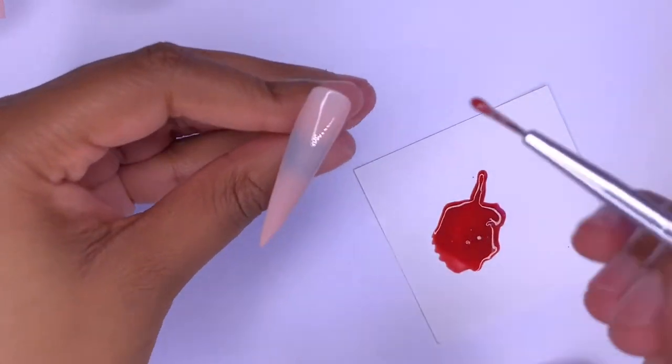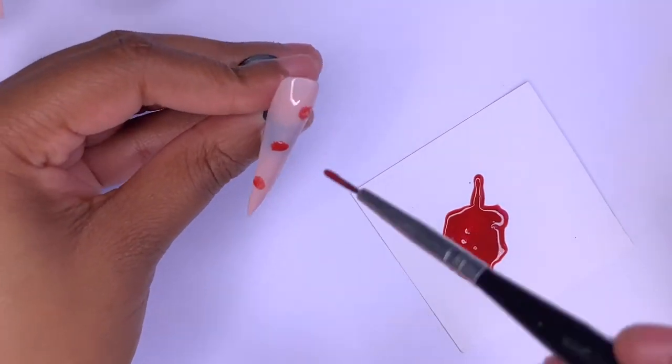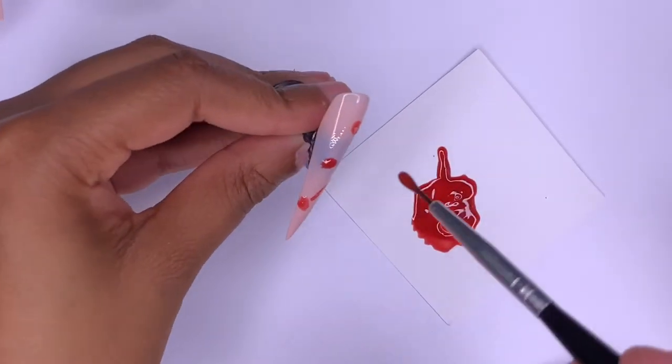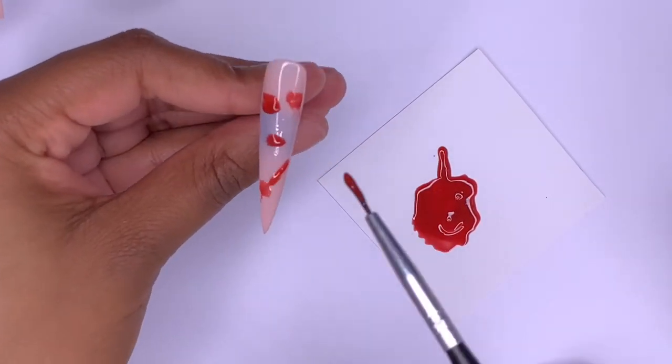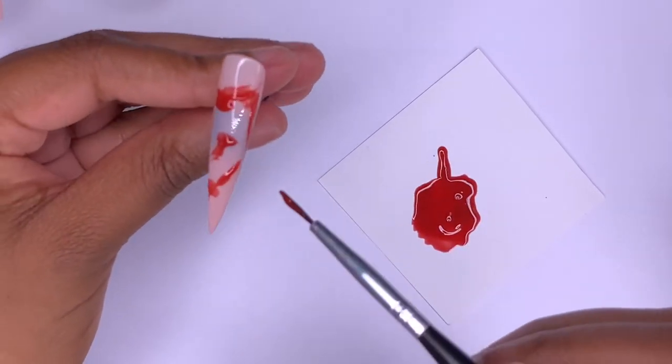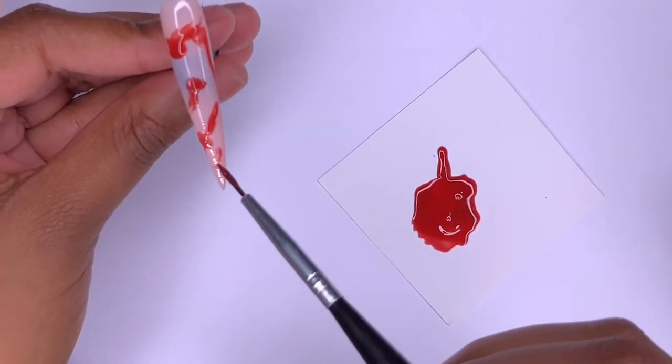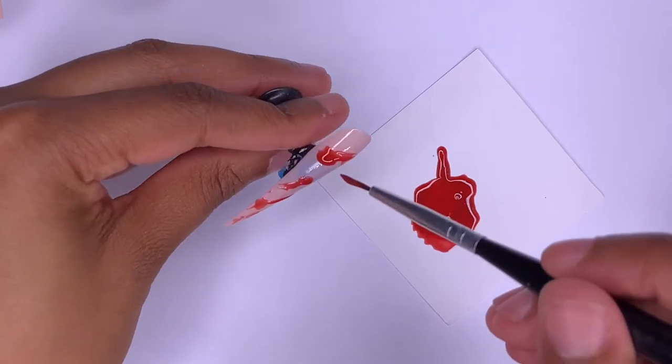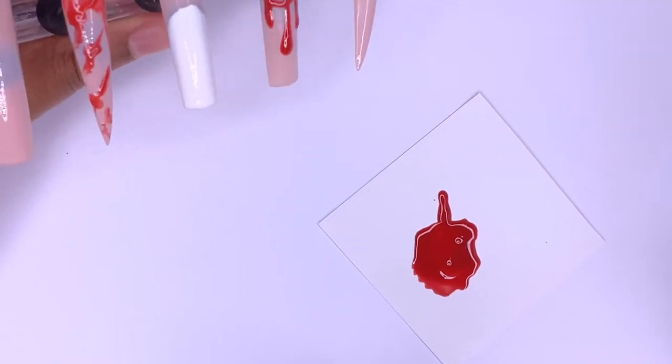For the pointer finger I'm going to be doing blood splatter. I'm just putting a few dots in random places and then just going in and kind of moving them around. I'm going to go back in and kind of thicken up the splatter a little bit more because I want it to look thick just like the blood drip on the ring finger.